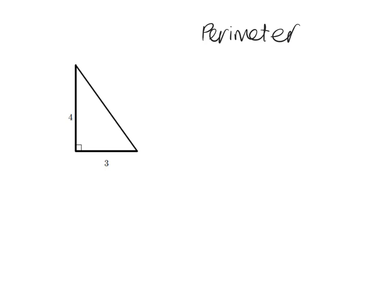We're looking at perimeter and area today. Starting with perimeter — we're not going to do much on this because you have done it before and perimeter is very simple. It's just: if you were a little ant walking around the edge, how far would you walk if you walked all the way around the edge of the shape? The only thing we're going to add now is that, because we've done Pythagoras, sometimes they're not going to give us all the information and we've got to work it out.